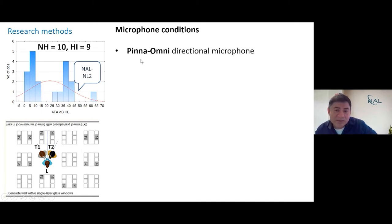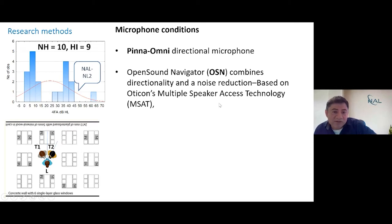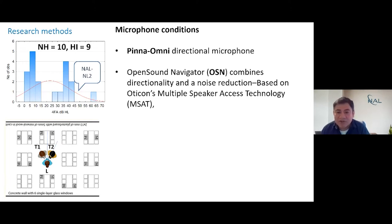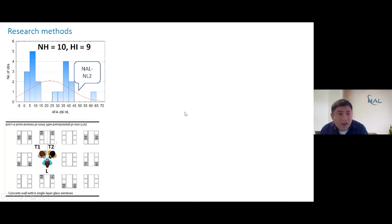For this particular study we used hearing technology provided to us by Oticon. That technology had two features we wanted to evaluate. One feature is called Pinna Omni, which functions as an omnidirectional microphone and served as our reference condition. We also used a beamformer technology called the Open Sound Navigator, which combines super-directionality functions with noise reduction features and uses a multi-talker searching algorithm that enables communication with multiple talkers. Essentially, we are comparing the omnidirectional against this advanced beamformer.